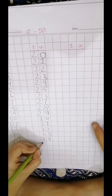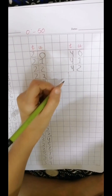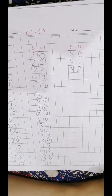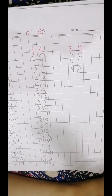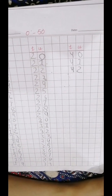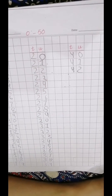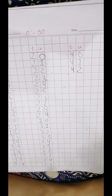Okay, next. How many tens in forty-two? Four tens. And how many units? Four.